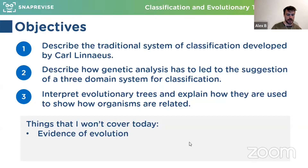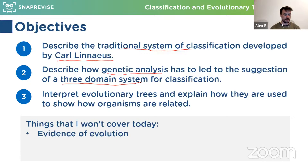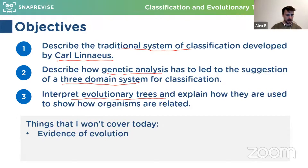We're going to look at the classification systems first invented by Carl Linnaeus, then look at how new genetic analysis and data has led us to change this system — you might have heard of the three domain system, which is the new way of doing it based on new data. Then we'll look at evolutionary trees, also known as phylogenetic trees, which show how organisms are related. These are the AQA spec points, but this content is relevant for all specs.